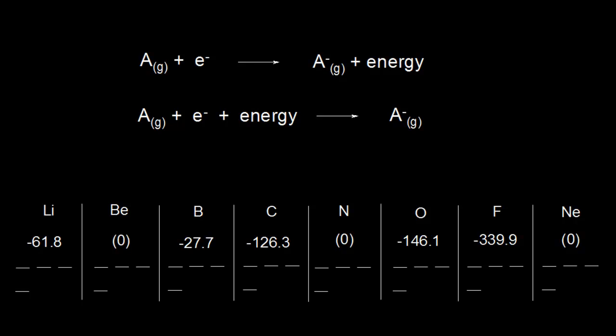In the last video, we talked about the definition for electron affinity, and we also talked about group trends. In this video, we're going to get into period trends. But before we do that, let's go ahead and review the energy changes associated with electron affinity. So remember, electron affinity is referring to the energy that is given off when an electron is added to a neutral atom in the gaseous state.